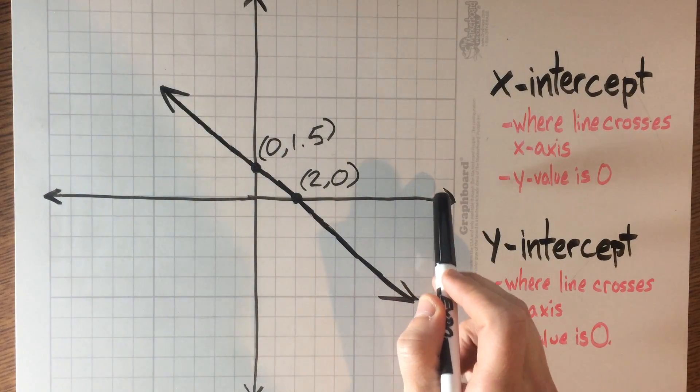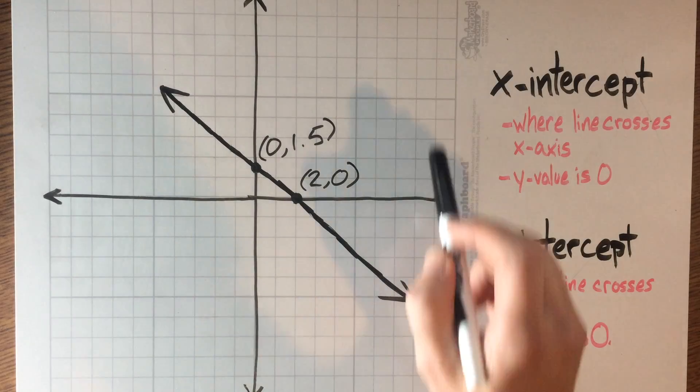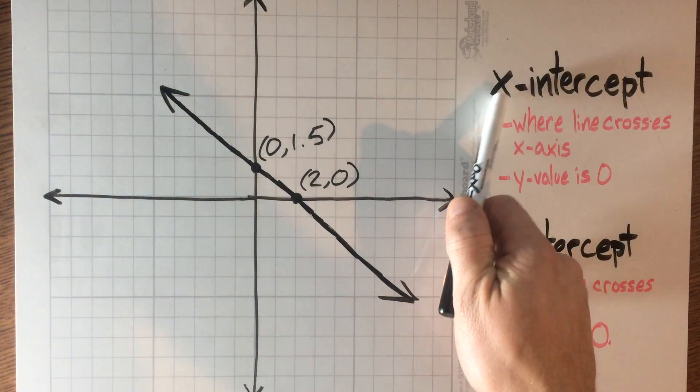Where it crosses the x-axis, it's never going to rise or lower in the y-direction, so that means y is always going to be 0 for an x-intercept.